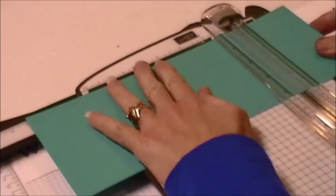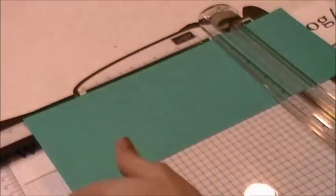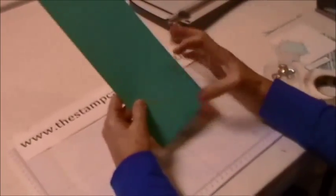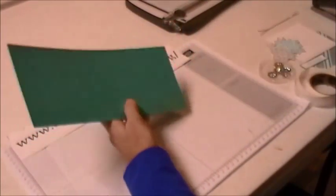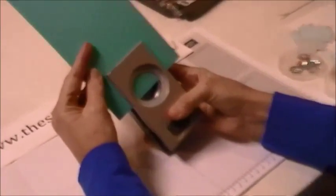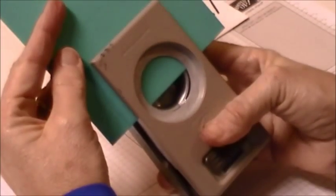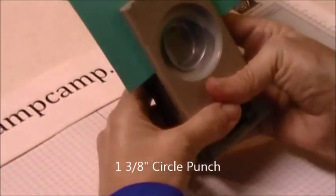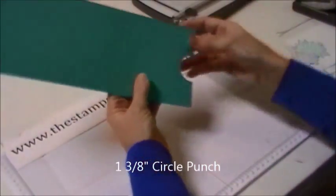Now this is 2½, I think that's 2½, close enough. You're going to put the 1⅜ inch circle punch about halfway in and punch that little divot like that.